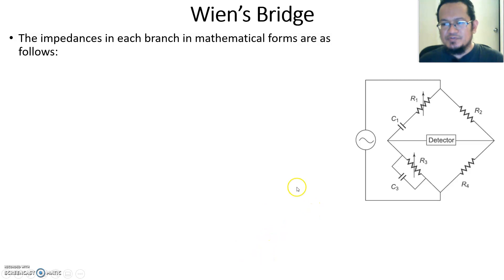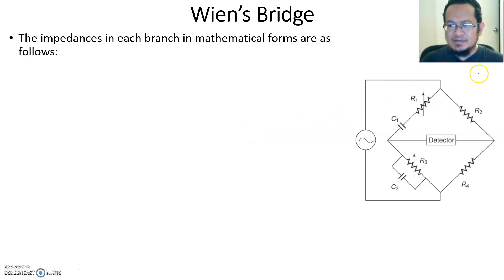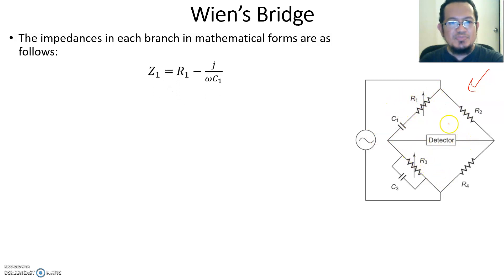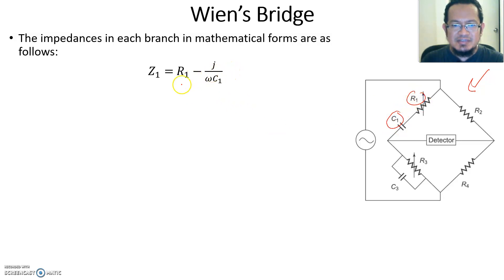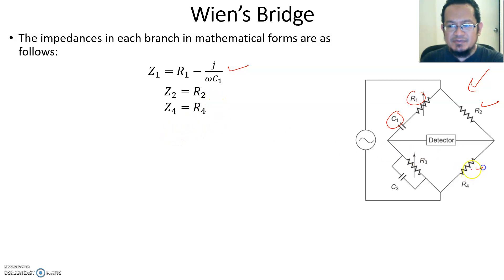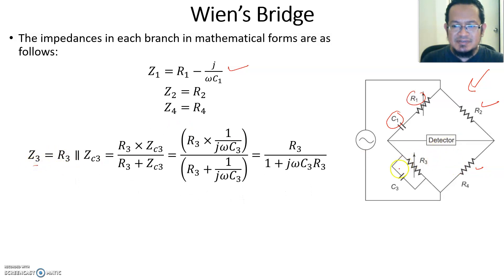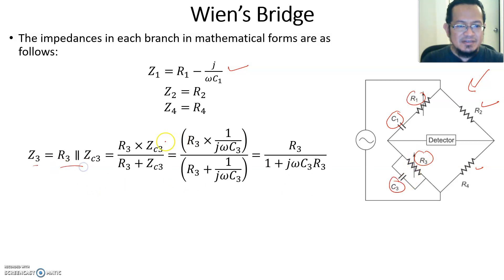Let's go straight to the configuration of the Wien Bridge. If you look at the figure here, it pretty much looks like a Wheatstone bridge or Maxwell bridge, except you will have different components at each of the branches. In branch number one, for the Wien Bridge, you have C1 and R1 in series — that is the impedance for branch number one. For branch number two, you have a resistor equal to R2. Z4 is branch number four. And Z3 is a parallel combination of resistor R3 and capacitor C3.